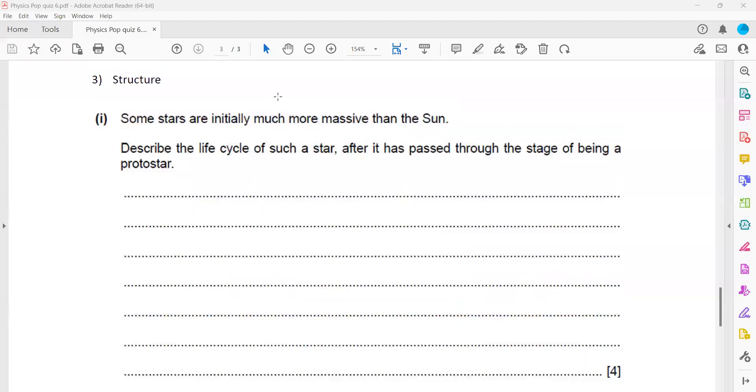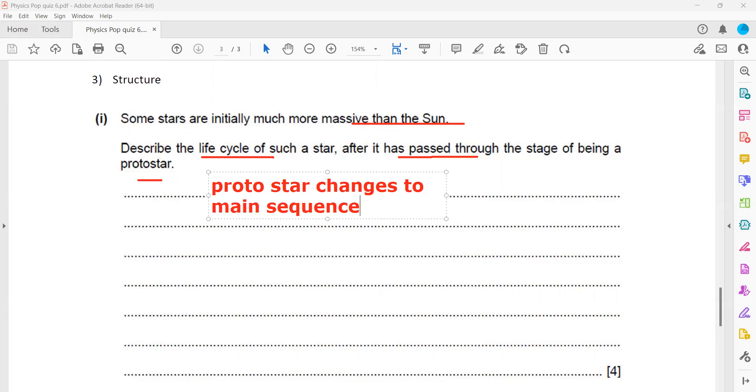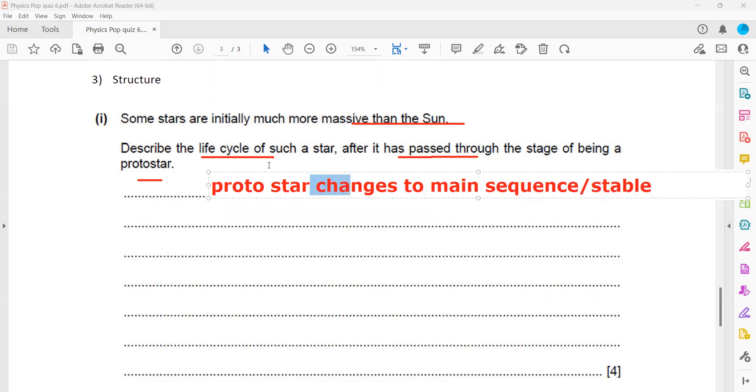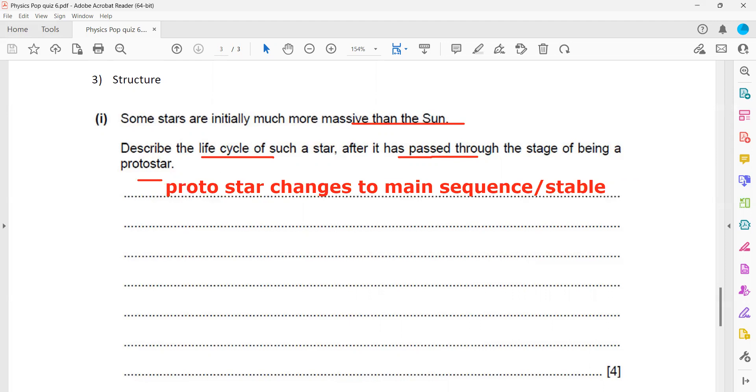Next, some stars initially which are much more massive than the sun - describe the life cycle of such stars as it passes through the stage from being a protostar. So you have to write for a massive star. So first for a massive star, what will happen? They will become a main sequence star. The protostar changes to main sequence or you can also say the stable star. For a main sequence or stable star, the radiation pressure equals the gravitational force. So the star won't change its size and it undergoes hydrogen fusion. That is the first thing.